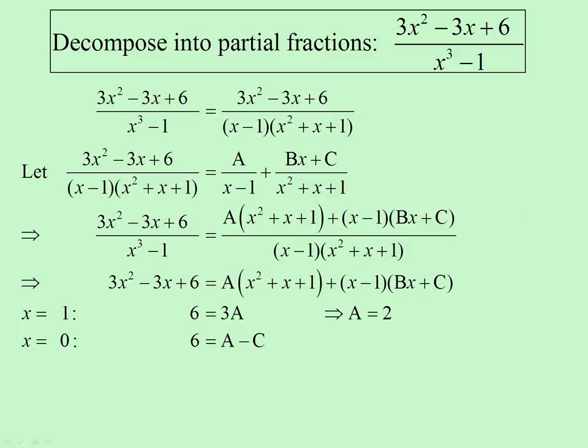If I put x equals zero - why have I chosen x equals zero? Because then the B will go at least, right - and I'll end up with just A and C, and I know A, so therefore I can get C.